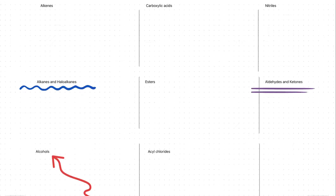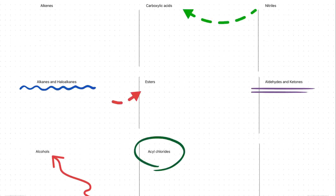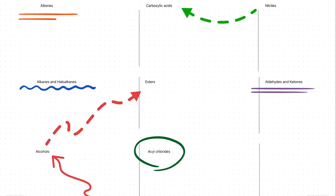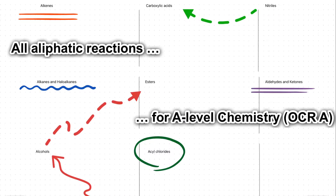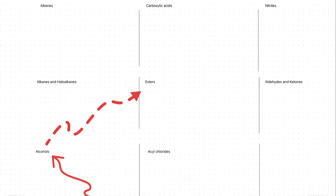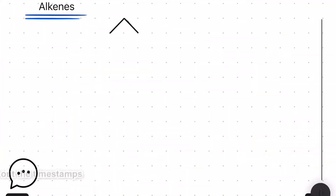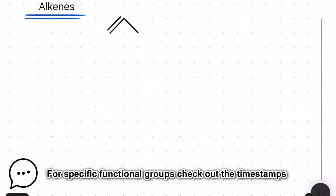Organic chemistry has loads of aliphatic reactions that you need to learn as part of your A-level. In this video I'm going to take you through all the reactions you need to know for the OCR-A specification, and I'll be using skeletal formula. I'll be throwing in some extra tips on the way, and if you'd like to go to a specific functional group, check out the timestamps in the video description.